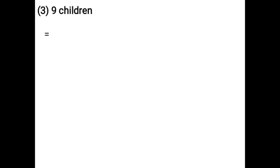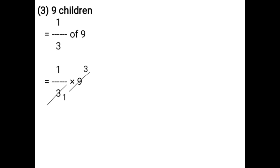9 children. That is equal to 1 upon 3 of 9, that is equal to 1 upon 3 into 9. Using the cancellation method: 3 ones are 3, 3 threes are 9, 1 three is 3. That is equal to 3 children.